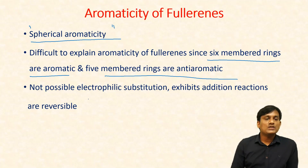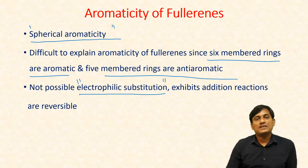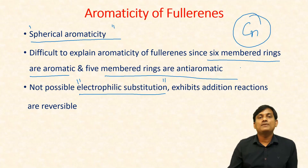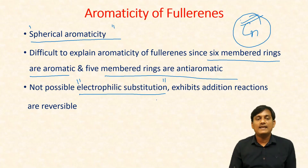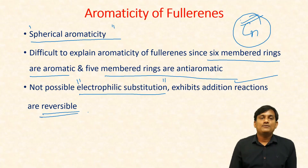Electrophilic substitution reactions are not possible for fullerenes. To exhibit electrophilic substitution reactions, the compound should have hydrogen. In the case of these allotropes, you can find only carbons, and it is very difficult to substitute carbon by an electrophile. These compounds can exhibit addition reactions, but these are reversible due to the aromatic nature of fullerenes.